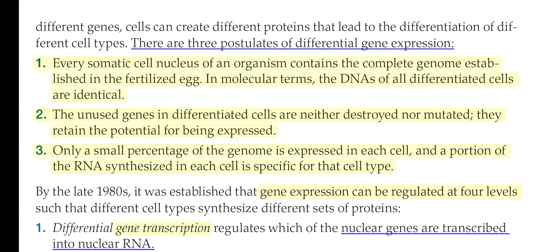There are three possibilities in differential gene expression. The first is that every somatic cell nucleus of an organism contains the complete genome established in the fertilized egg. When an egg is fertilized, it possesses a pair of haploid chromosomes that combine to form a complete diploid cell, which we call a zygote. The zygote contains the same amount of genomic information as found in every single differentiated cell, and that's the uniqueness.